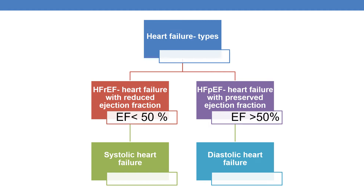Coming to the types of heart failure — the major classification is based on ejection fraction. Heart failure is categorized into two types: heart failure with reduced ejection fraction (HFrEF) and heart failure with preserved ejection fraction (HFpEF). The normal ejection fraction is greater than 50%. When it falls below 50%, it leads to systolic heart failure. When it is greater than 50%, it is diastolic heart failure.